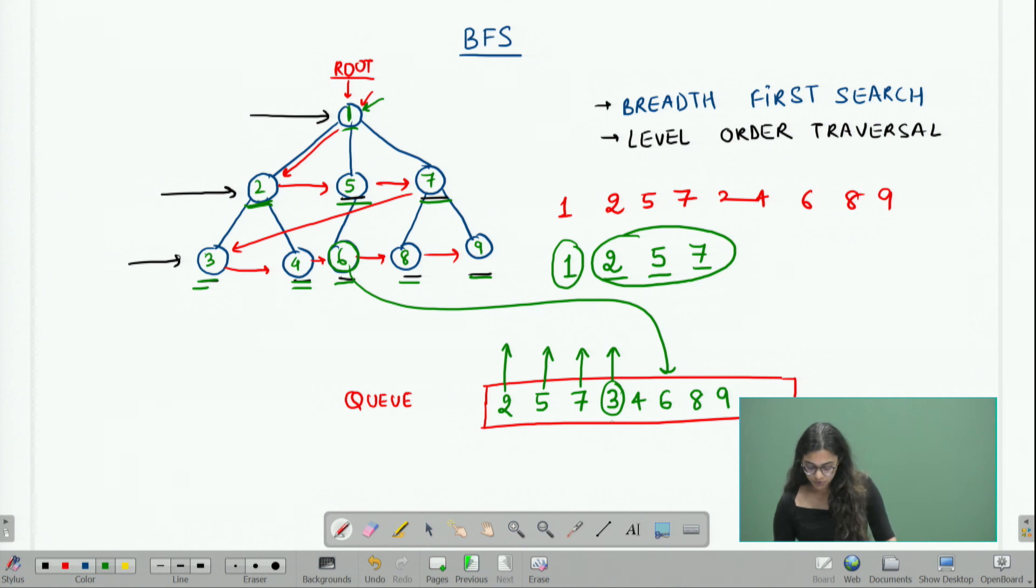So now I am moving on to nodes 3, 4, 6, 8, and 9 which are actually at level 3.